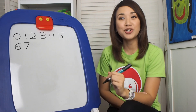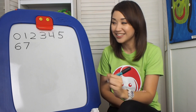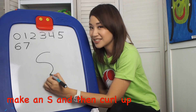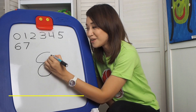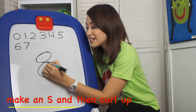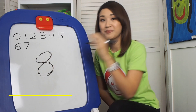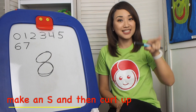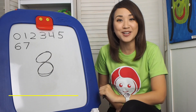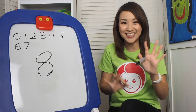Very good! Number 8. So how do we write number 8? Make an S and then curl up. Make an S and then curl up to make the number 8. Very good!